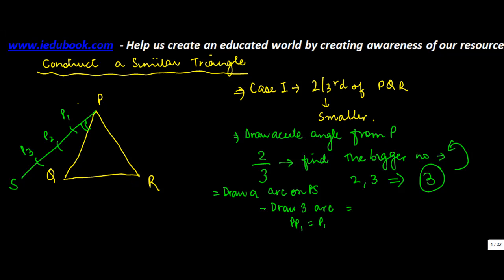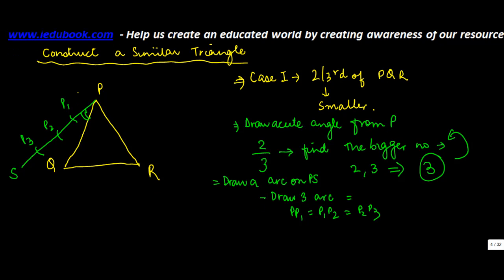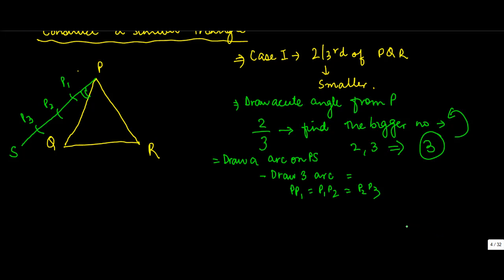Such that PP1 is equal to P1P2 is equal to P2P3. So you have drawn three arcs. Then basically you join P3Q. You join this line from P3Q, and you measure this angle just like you did in the earlier case.